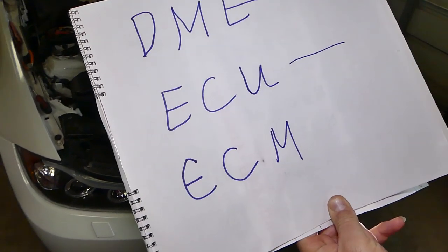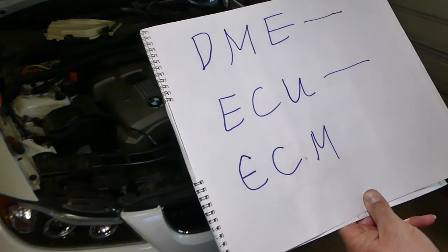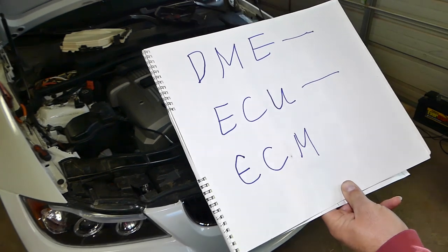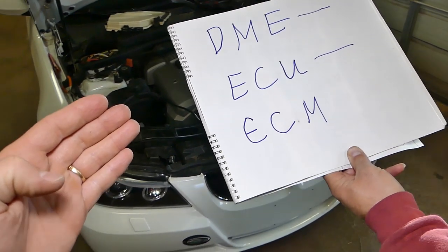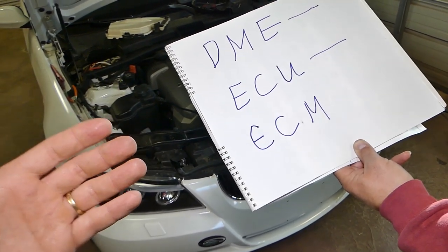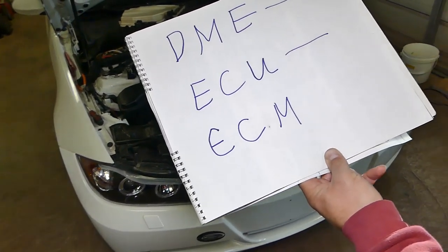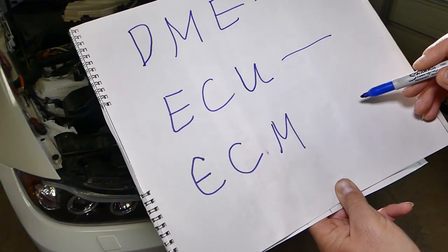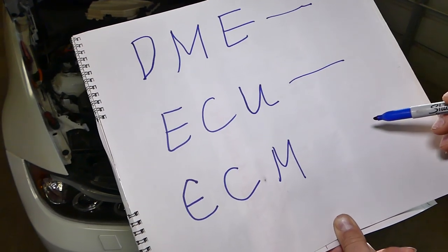What is ECU? ECU is pretty much the same thing — it stands for Engine Control Unit. You'll notice Honda, Ford, and different brands call it ECU. People on forums will always argue about whether it's a DME or ECU, but it doesn't matter. It's the same thing — the engine computer. ECU stands for Engine Control Unit, DME stands for Digital Motor Electronics.